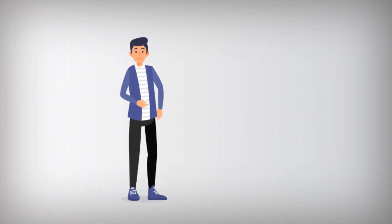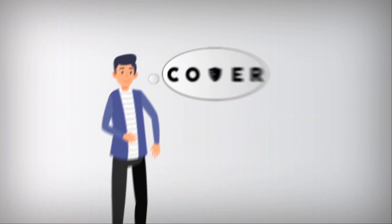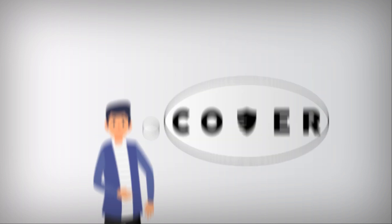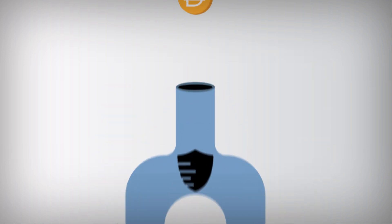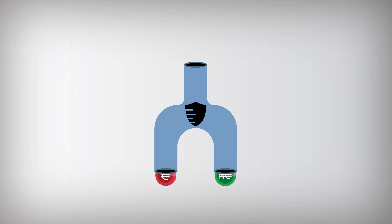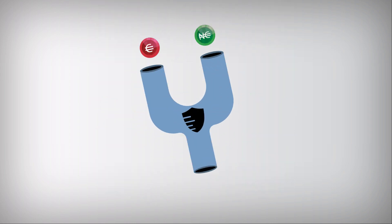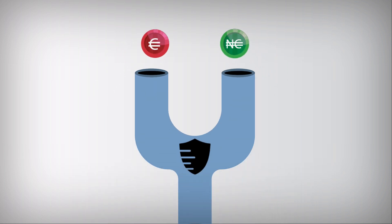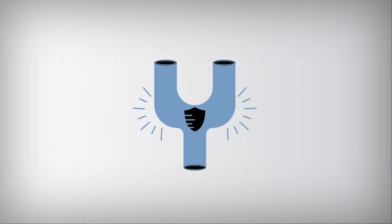Let's say Bob wants to become a market maker and deposits DAI as collateral. By locking up DAI, he receives claim and no-claim tokens. If Bob wants his DAI back before the coverage expires and no hack occurred, he will simply need to return both claim and no-claim tokens.